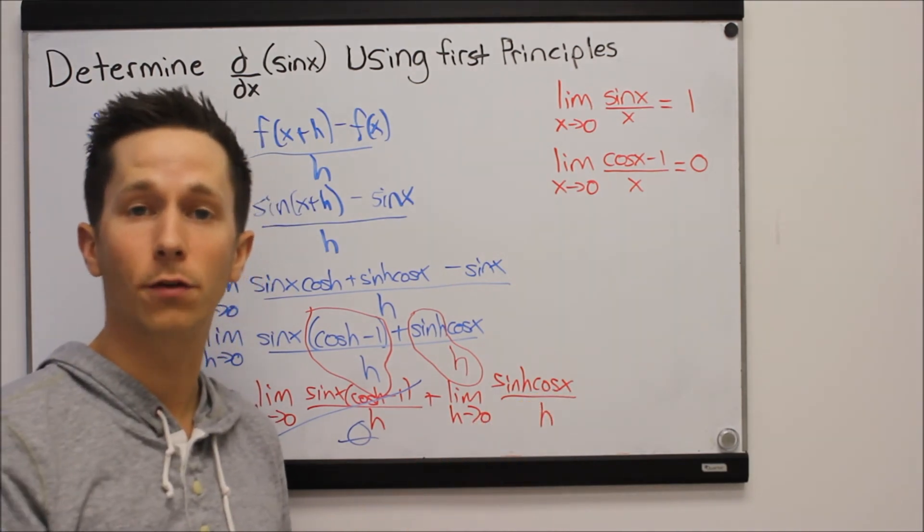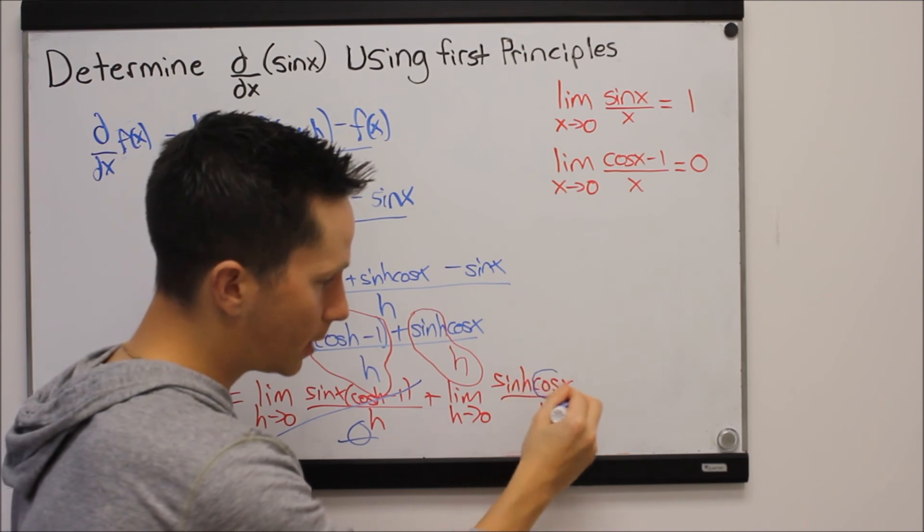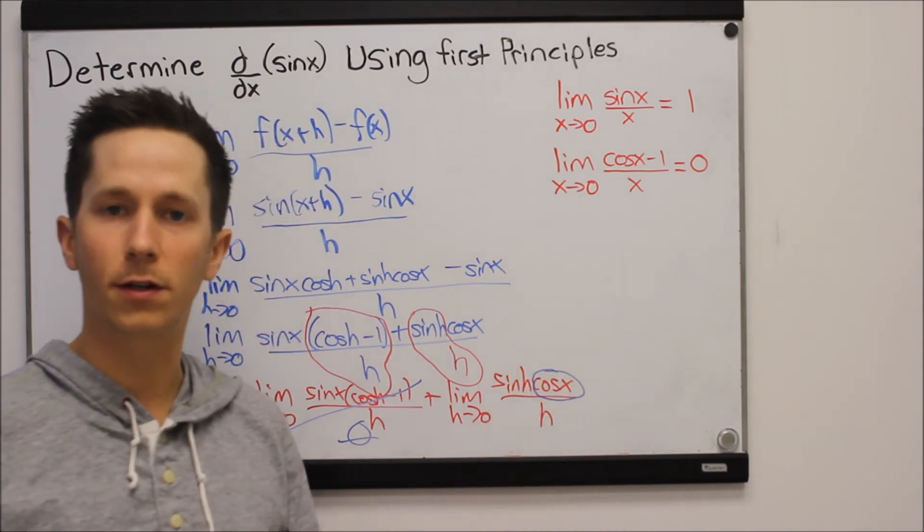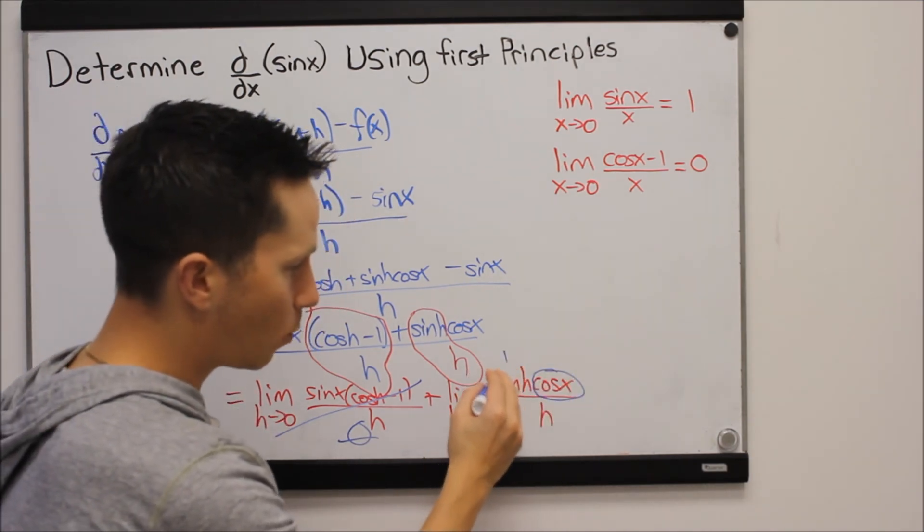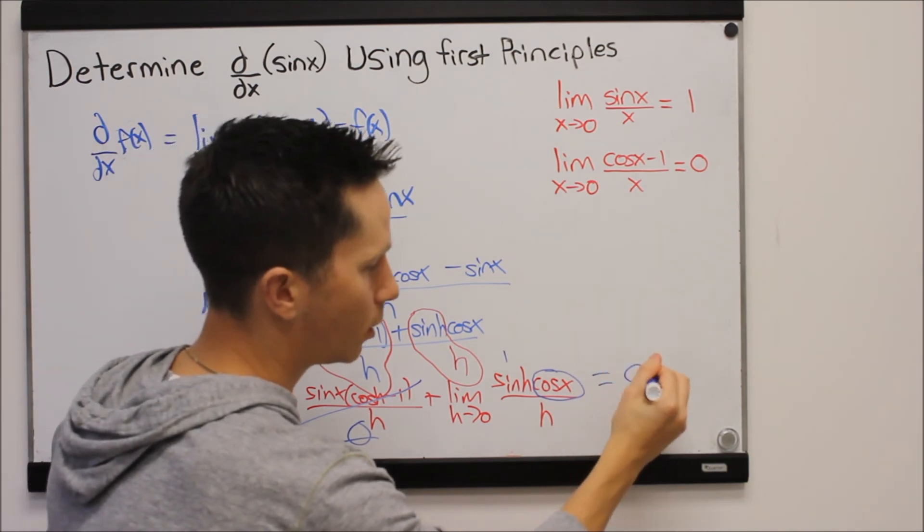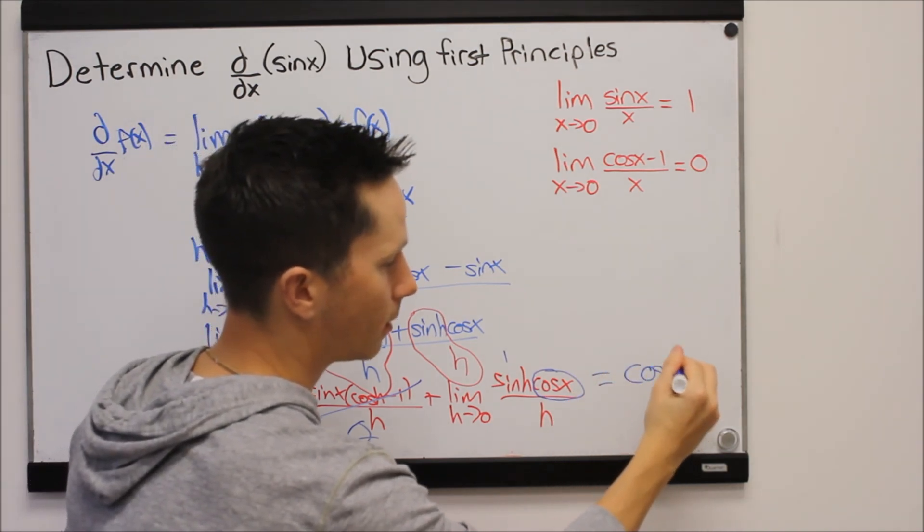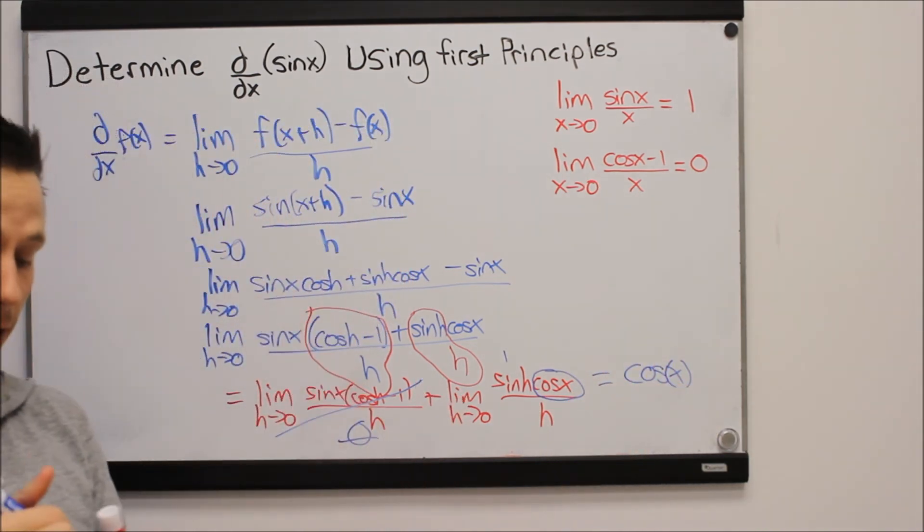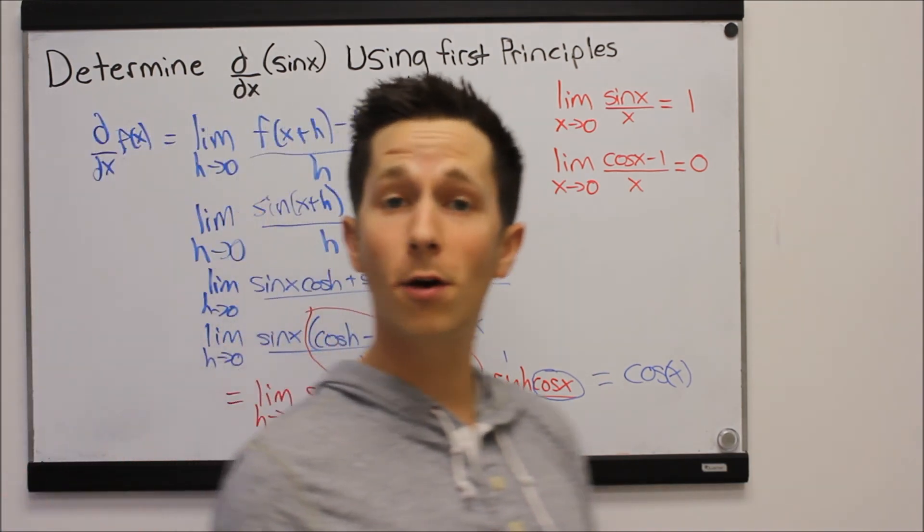Plus we said that this piece is sine h over h is one times cos of x. And that doesn't depend on h, cos of x. There's no h in this piece. So the fact that h is going to zero doesn't matter. So it's just going to be one times cos x which is cos x.